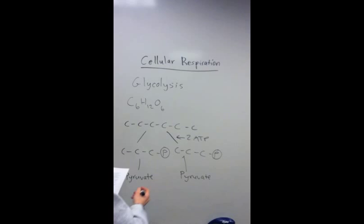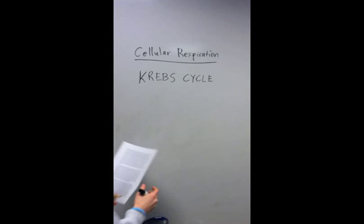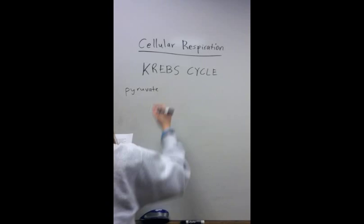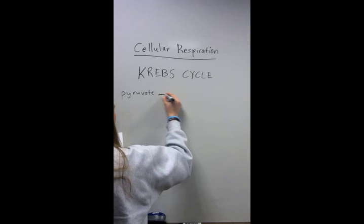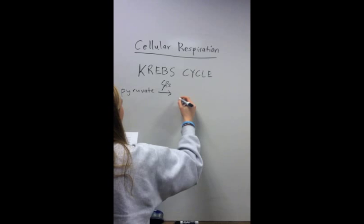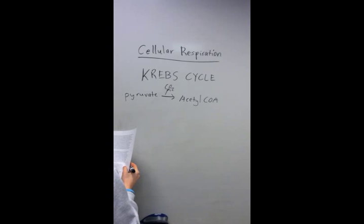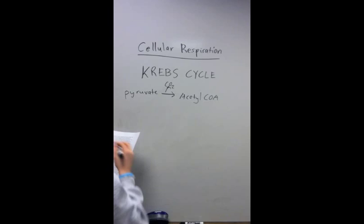Now I'm going to talk about the Krebs cycle which is the next process in cellular respiration. So you have one pyruvate molecule, and there are two that are produced in the glycolysis step. Each pyruvate molecule breaks off one carbon which produces CO2 to create acetyl-CoA which is a two carbon molecule. This step reduces one NAD+ into NADH.